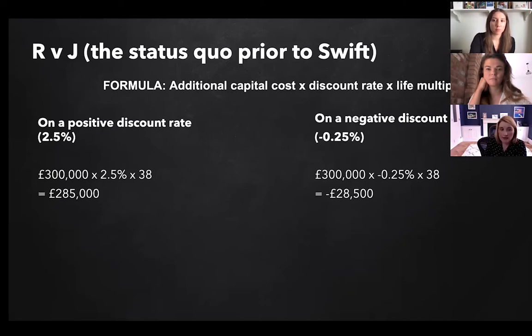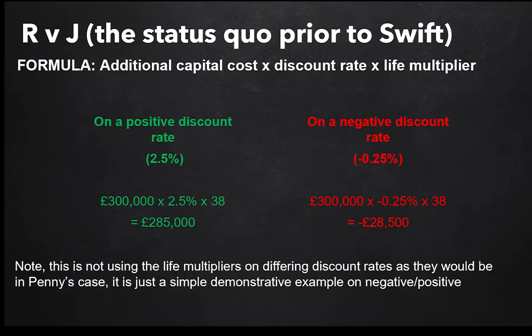The key ratio of Roberts v Johnston is that you're not compensating for the additional capital value of the required property. What you would do is look at the annual loss incurred by a claimant due to the loss of income from the capital which had been spent on property instead — in other words, if you'd been able to invest that additional sum, how much would it have earned? This resulted in the formula on the screen: additional capital costs multiplied by the discount rate, multiplied by the life multiplier for the claimant. Wells v Wells came along afterwards, and the discount rate was set subsequently by the Lord Chancellor. This was all fine where the positive discount rate was 2.5%.